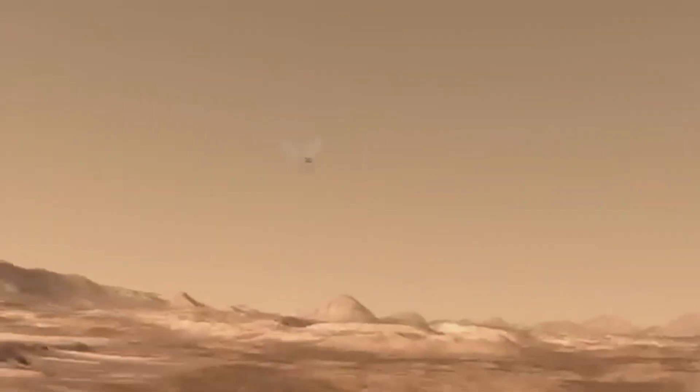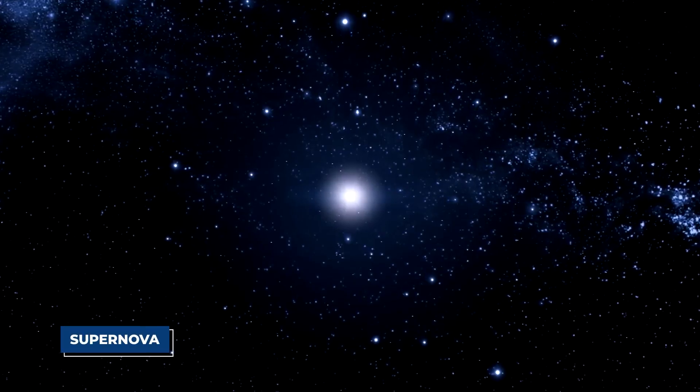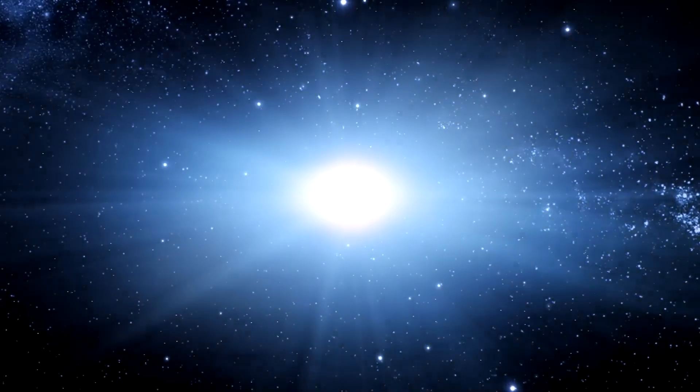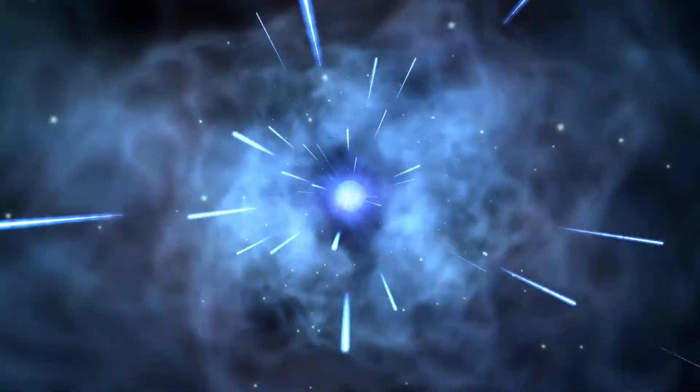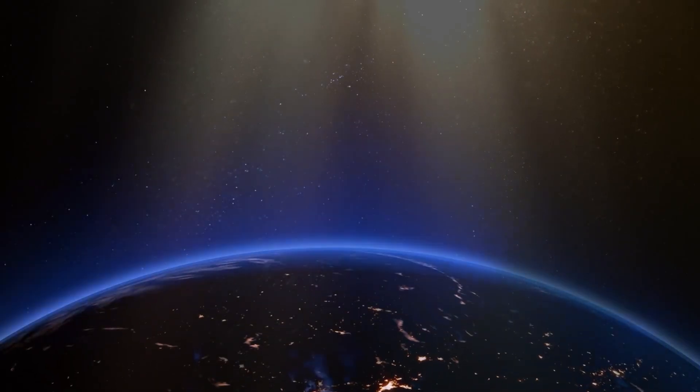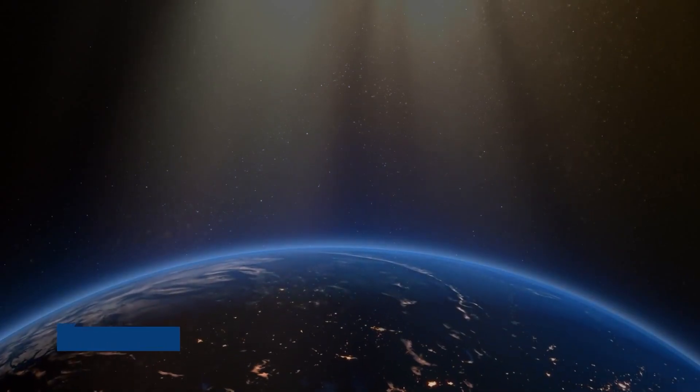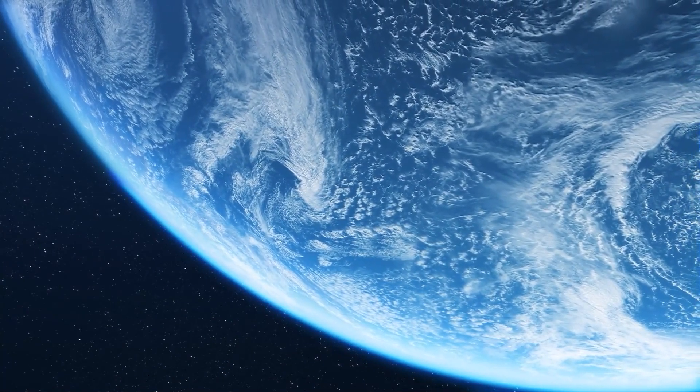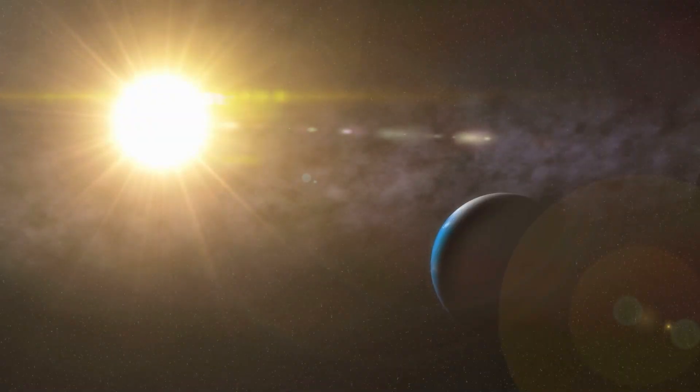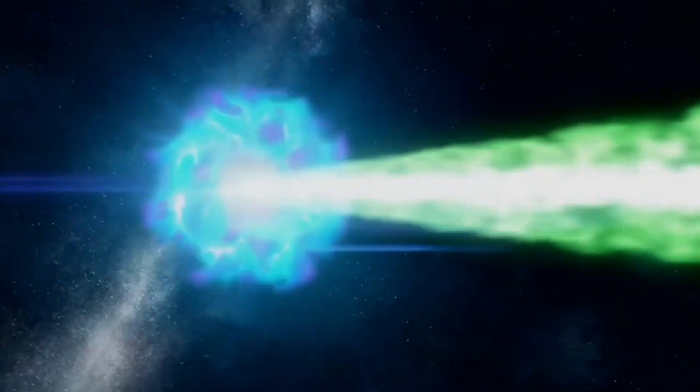A supernova is when a giant star explodes, shining brighter than a whole galaxy for a few weeks. If one of these happened within about 30 light years of Earth, the flood of radiation would strip away our planet's protective ozone layer. Without that shield, life on the surface would be blasted by the sun's ultraviolet light, causing incredible damage.